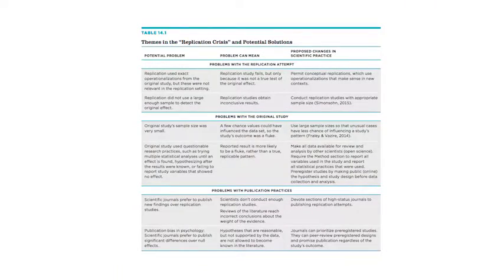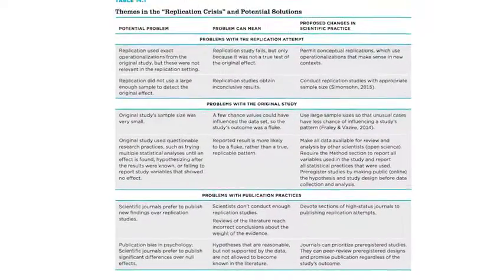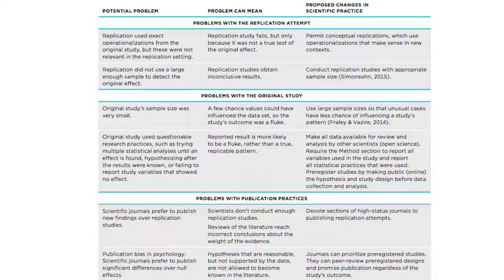In chapter 14 of the book, I address all three of these elements and include a table depicting the different potential reasons for the lack of replication, including potential solutions that psychologists are now engaged in. For example, I write about the new practice of pre-registration, where psychologists publish their planned methods and hypotheses before collecting their data. This is an antidote to HARKing.